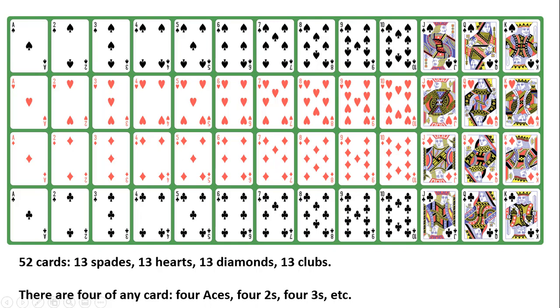There are four of any card — four aces, four twos, four fours, four kings, and so on.